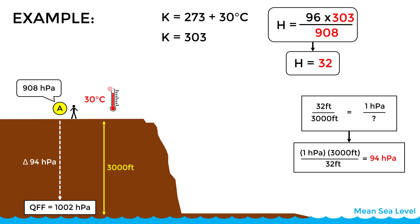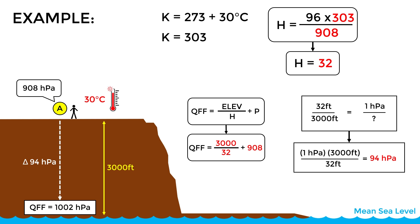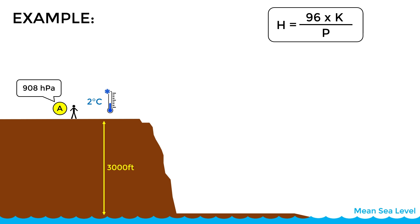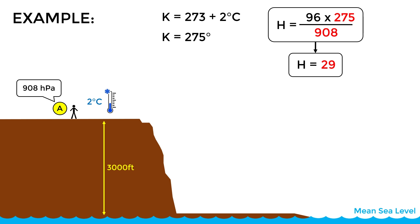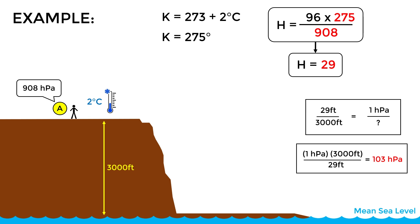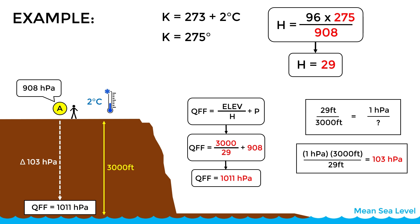So far we have seen the case of a higher than standard temperature. Let's now look at what happens with a low temperature. We have the exact same conditions as before, but now the temperature at the station is 2 degrees Celsius. Following the same steps, we first calculate the vertical pressure gradient using the formula, and now the pressure changes by one hectopascal for every 29 feet. Applying the rule of three, we obtain a pressure difference of 103 hectopascals, which results in a QFF of 1,011. Applying the other formula gives the same result of 1,011.